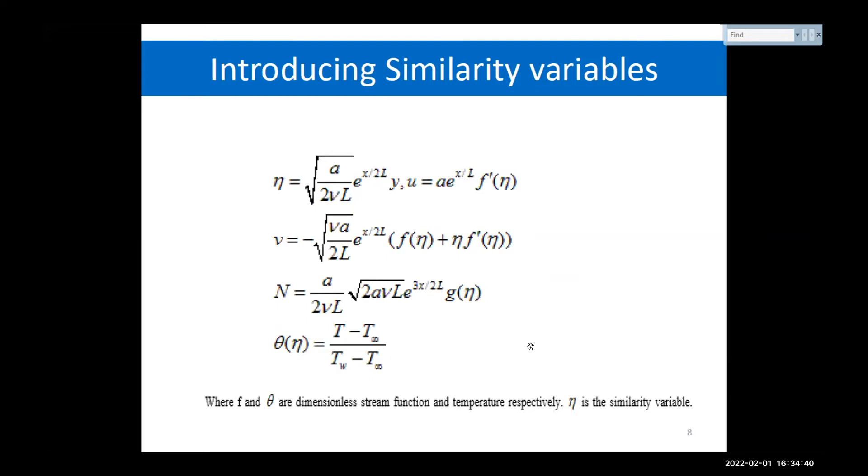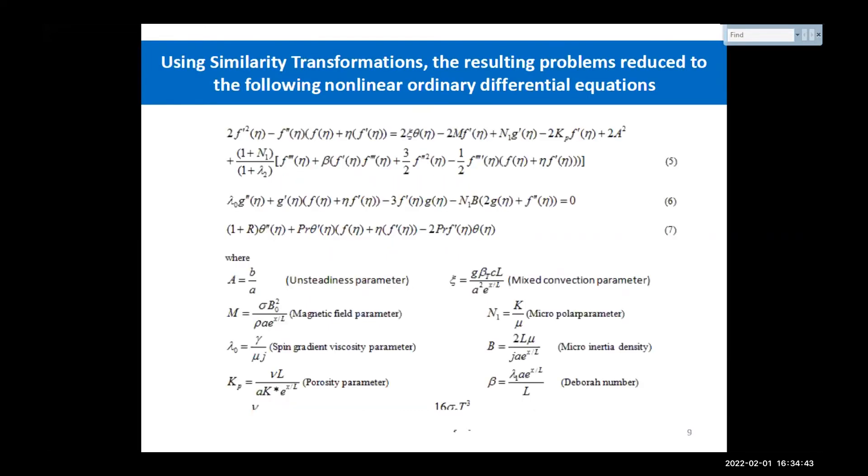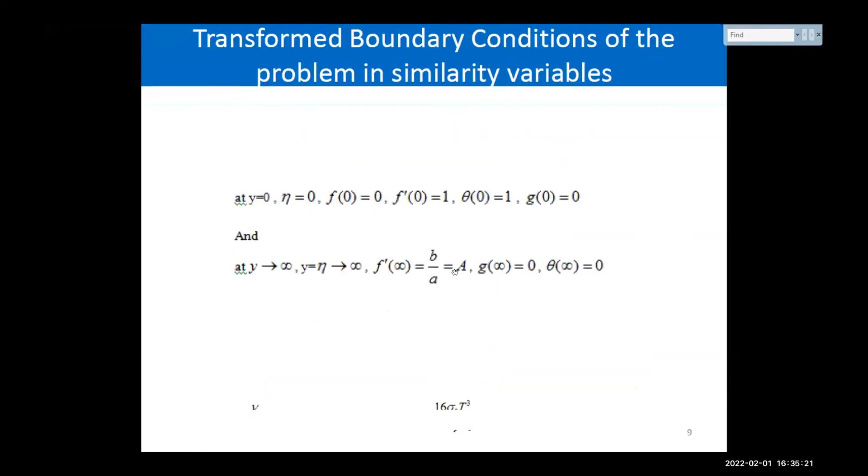Introducing these similarity variables, the equations have been transformed or reduced to the nonlinear ordinary differential equation. With the help of the BVP package or the built-in solver, these equations have been reduced. And here graphically, we have applied these equations for simulated velocity, micro rotation, and the temperature. And the effect of these parameters has been studied based on the graphical results.